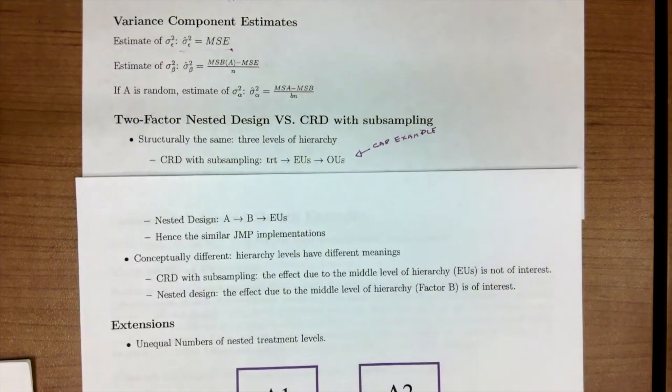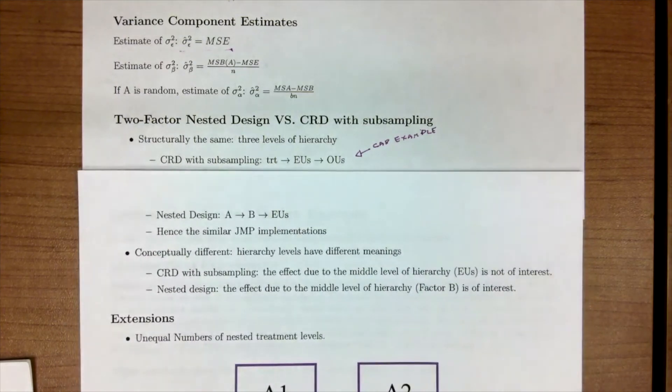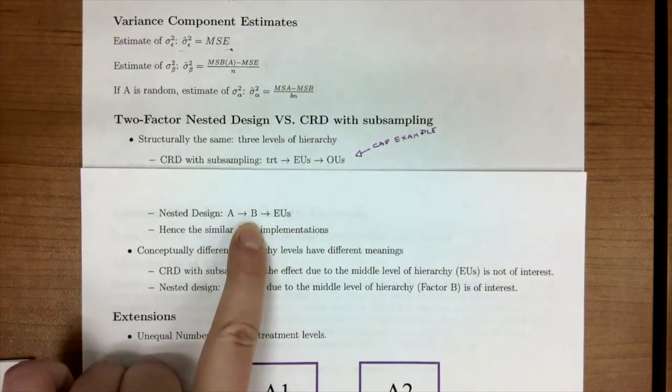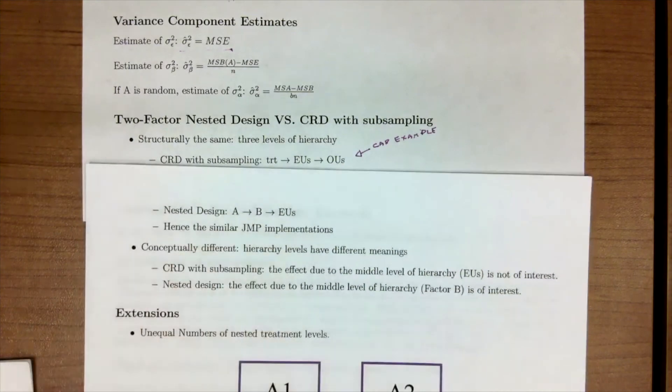In a nested design, we have two factors, A and B, which are of interest to us. And so the middle level in a nested design, this B, which would be the machine head, we're interested in our problem. And we're interested in if there's variability from machine head to machine head.